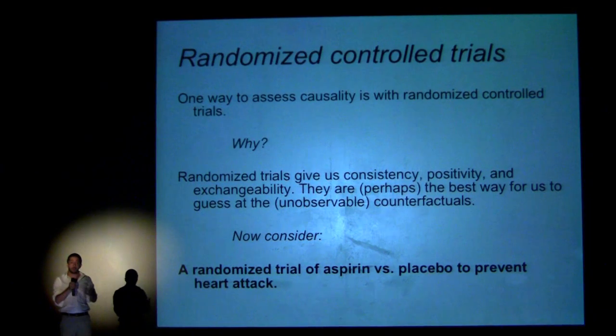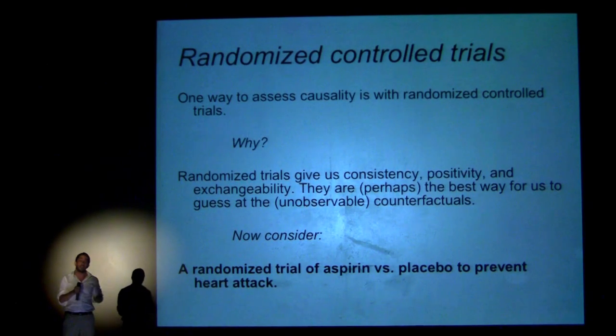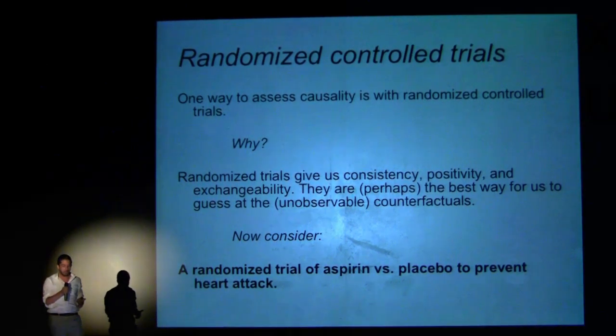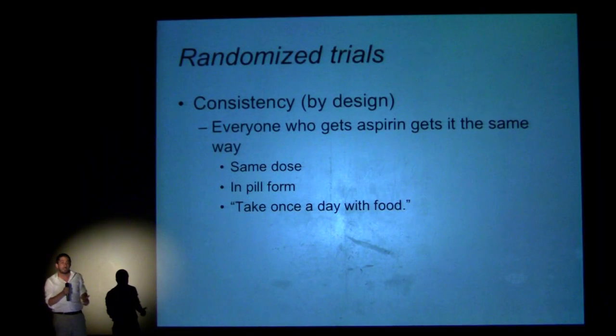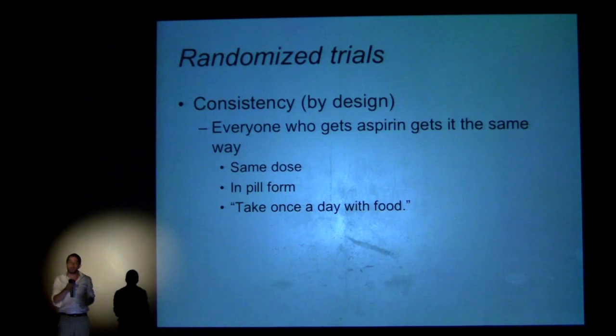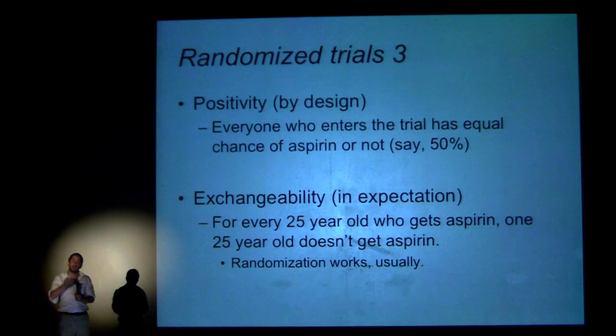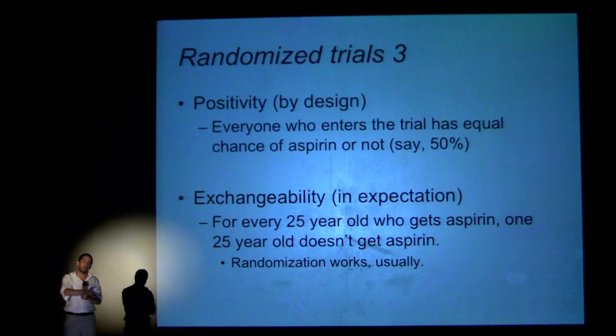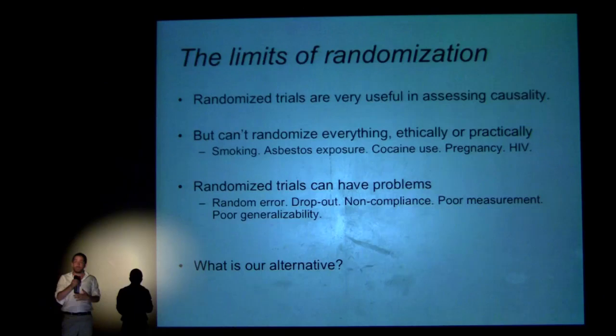One way to assess causality is with randomized control trials, because they give us consistency, positivity, and exchangeability. Consider a randomized trial of aspirin versus placebo to prevent heart attack. We get consistency by design, because everyone who gets aspirin gets it the same way — the same dose in pill form with the same instructions. We get positivity by design because everyone in the trial has a 50% chance of getting aspirin or placebo. And we get exchangeability because for every 25-year-old who gets aspirin, there's a 25-year-old who doesn't. Randomized trials are very useful in assessing causality.